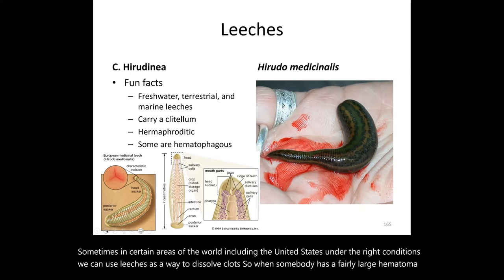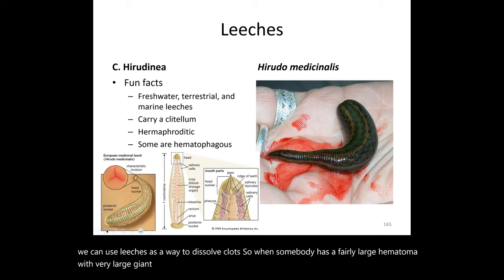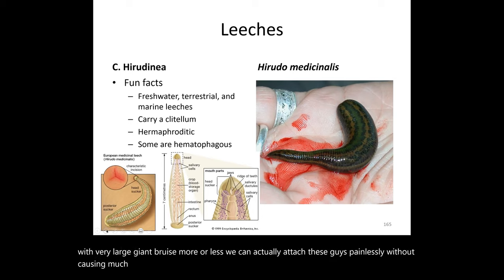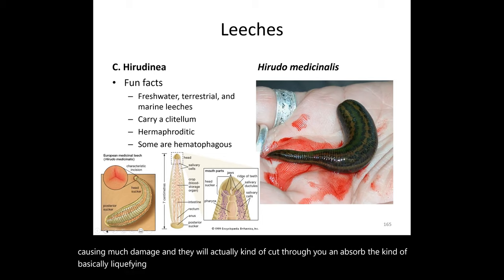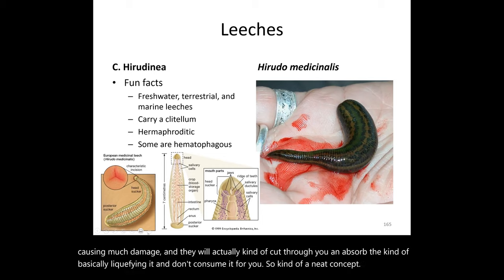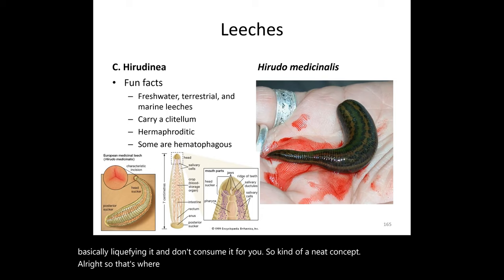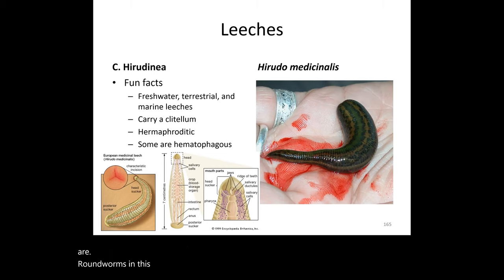Leeches can be used to dissolve clots. When someone has a fairly large hematoma — essentially a giant bruise — leeches can be attached painlessly, they cut through the skin, absorb the clot by essentially liquefying it, and consume it. So that's where we'll conclude our overview of worms: we've covered flatworms, roundworms (nematodes), and segmented worms (annelids).